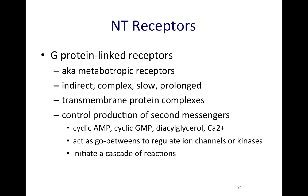Another type of receptor is a G-protein-linked receptor, which is a bit more complicated. It's also called G-protein-coupled receptors or metabotropic receptors. These are much more indirect — it's a complex cascade of reactions which takes more time. But you are going to get an amplification of that original signal, so you get more bang for your buck with a G-protein-linked receptor compared to an ionotropic receptor.